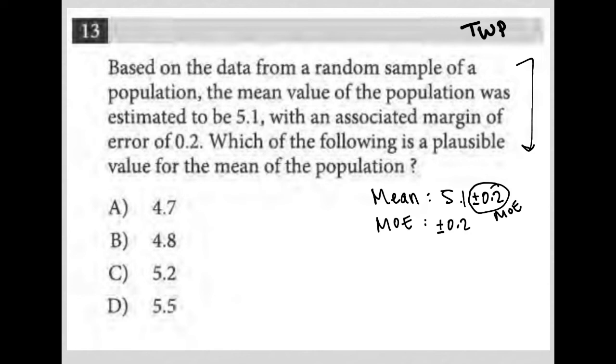So, 5.1 minus 0.2 would be 4.9. And then 5.1 plus 0.2 would be 5.3. All right. So, the mean should be somewhere in between these things.